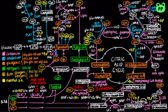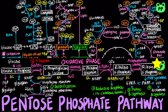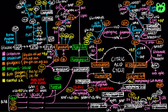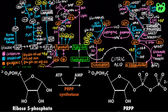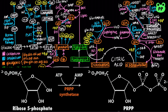Lastly, in bacteria, histidine can be derived from glucose-6-phosphate. First, glucose-6-phosphate can be converted to ribose-5-phosphate through the pentose phosphate pathway. Ribose-5-phosphate can then be converted to phosphoribosylpyrophosphate, abbreviated as PRPP, by PRPP synthetase, with ATP serving as the donor of two phosphate groups. PRPP is then converted to histidine through a series of reactions. PRPP can also serve as a precursor to nucleotide biosynthesis, which will be covered in a future video.